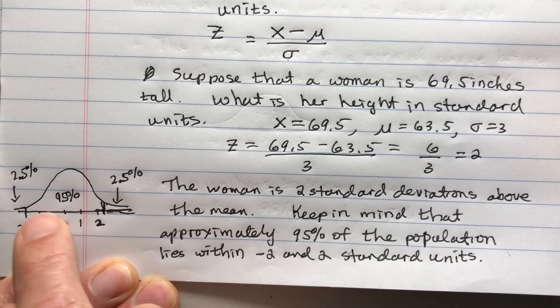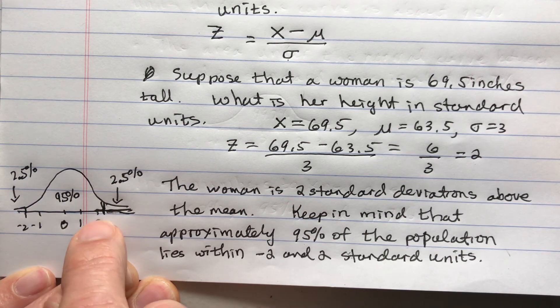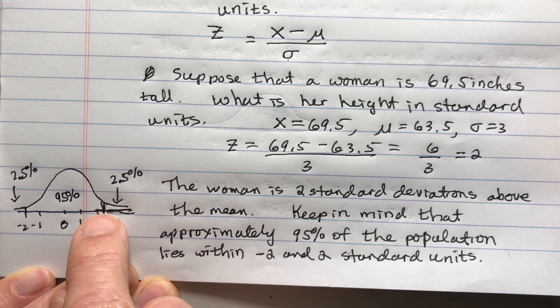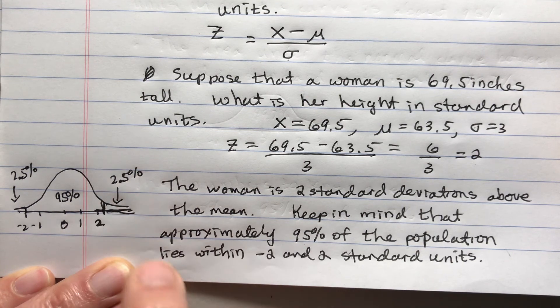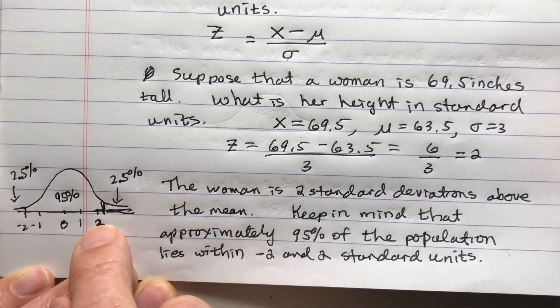We're saying two standard units. When we use this empirical rule, which is 95% between negative 2 and 2 of the population, we say this person's on the tall side. Only 2.5% of the people are her height or more.